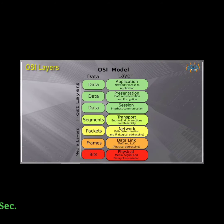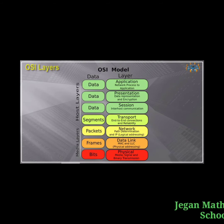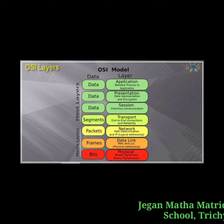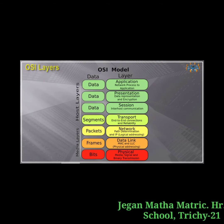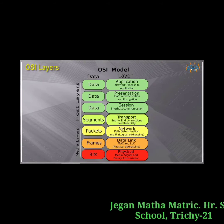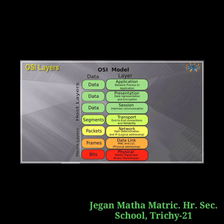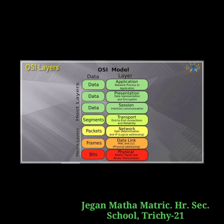The transport layer is the fourth layer, which guarantees that the transportation and sending of data is successful. It includes error checking operations. The session layer is the fifth layer. It identifies and establishes sessions between different network entities and controls the dialogues between computers.